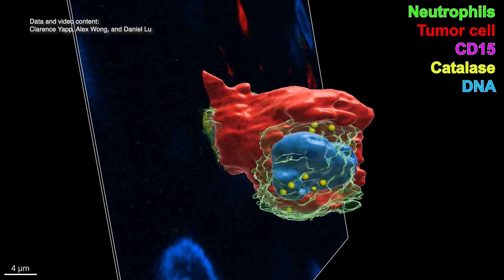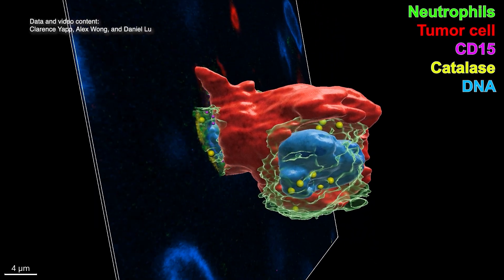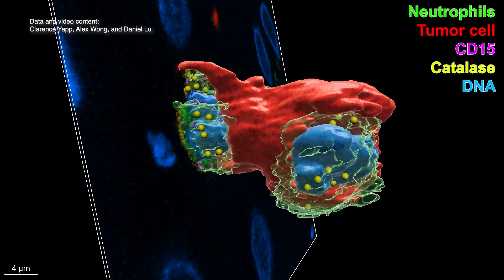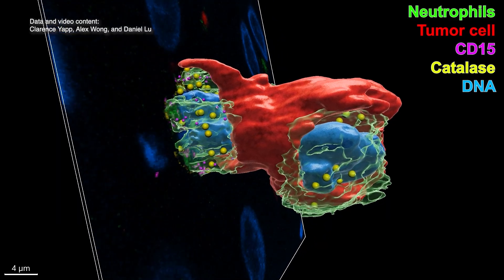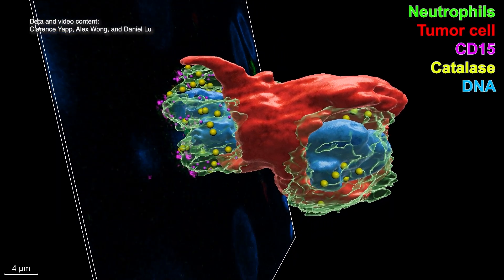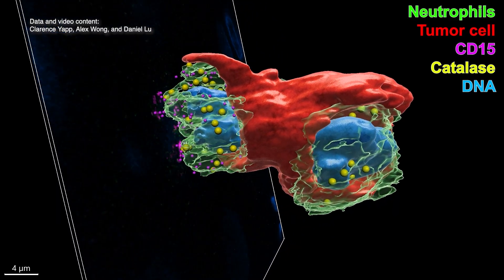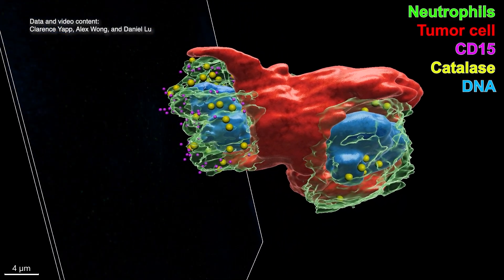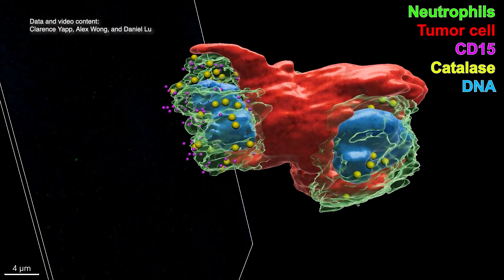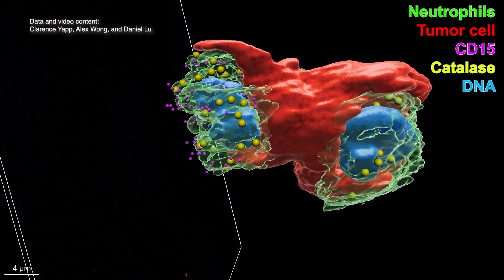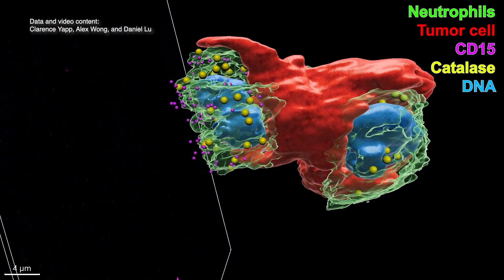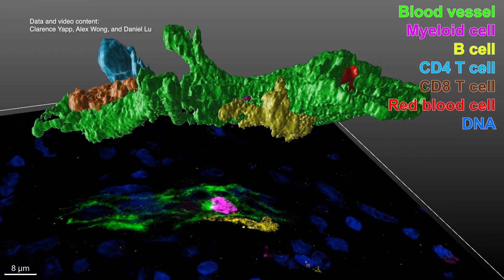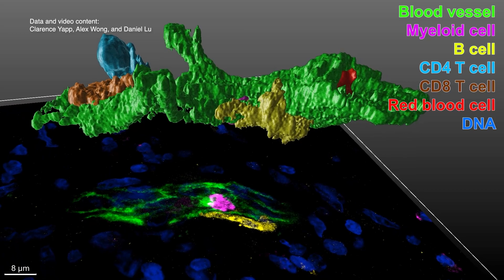Scientists have traditionally learned about human diseases by using a microscope to examine tissue samples from patients. Because the samples are so thin, scientists can only study a handful of the thousands of proteins present, limiting the information they can gain about how the immune system combats disease.